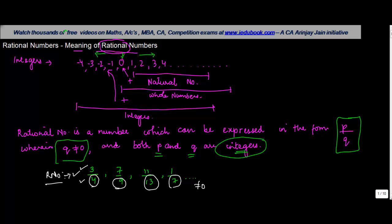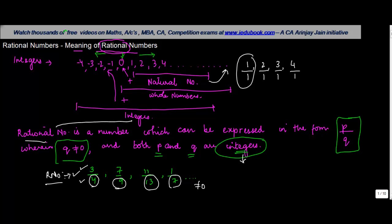Now if you notice, rational numbers are of the form P upon Q. So which means that all the natural numbers — 1, 2, 3, 4 — can be written as 1 upon 1, 2 upon 1, 3 upon 1, 4 upon 1. If we write them like this, they also become rational numbers, because they are of the form P upon Q where P and Q are both integers and Q is not equal to 0. Hence it follows that all natural numbers form part of rational numbers.